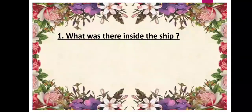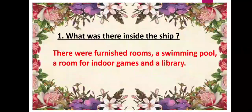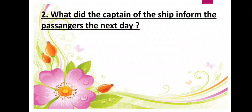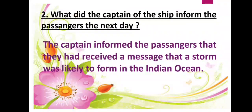Answer the following. What was there inside the ship? There were furnished rooms, a swimming pool, a room for indoor games, and a library. What did the captain inform the passengers the next day? The captain informed the passengers that they had received a message that a storm was likely to form in the Indian Ocean.